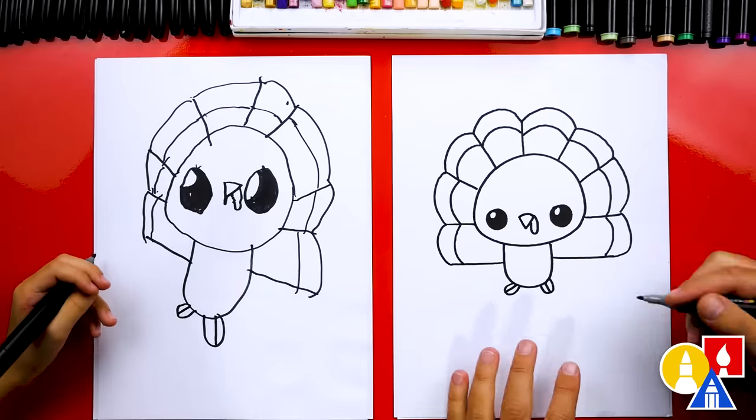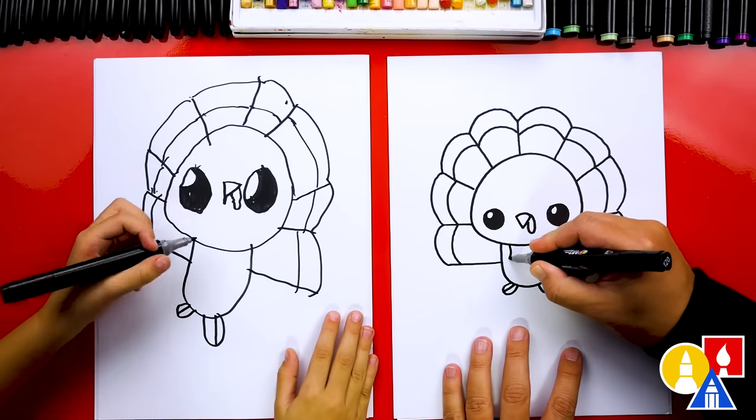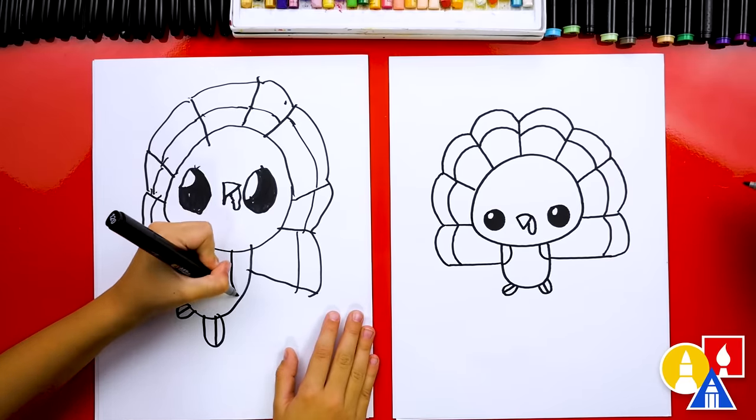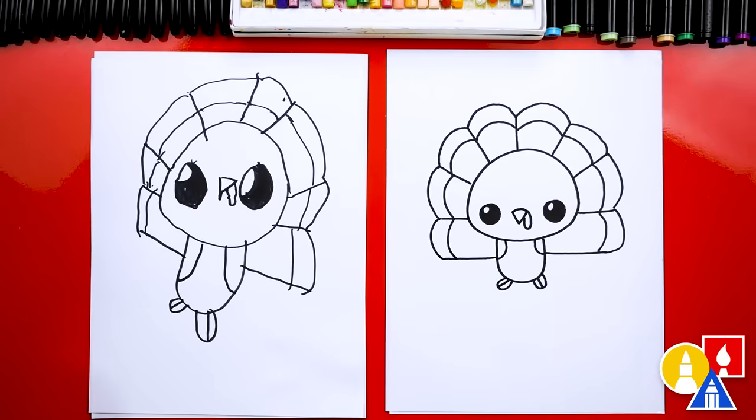We're just going to repeat the same thing going all the way across and you can connect them to the lines too. Right here you could connect that to the lines, and then here also. There you go. And the last thing we could add are little wings. I'm going to draw one right here and one right here. Olivia, we did it. We finished drawing our turkeys.